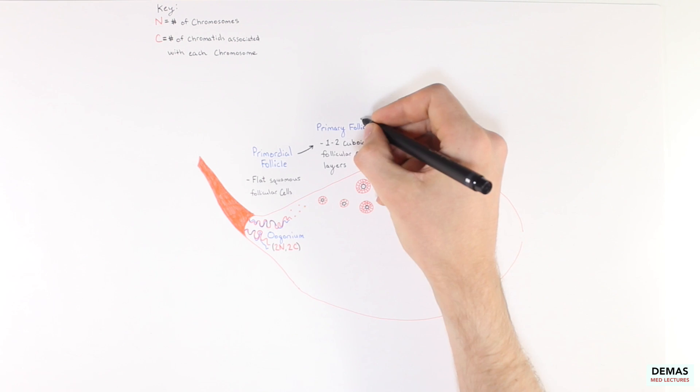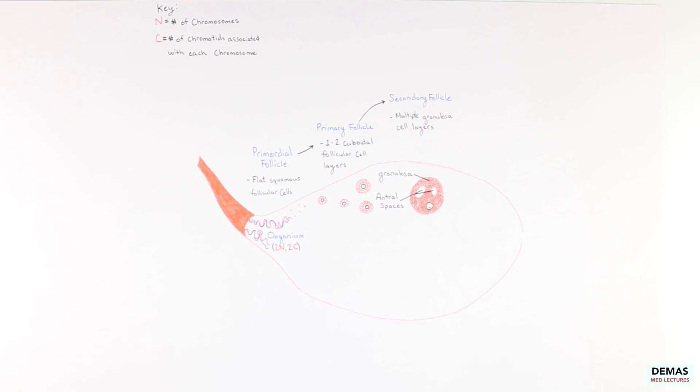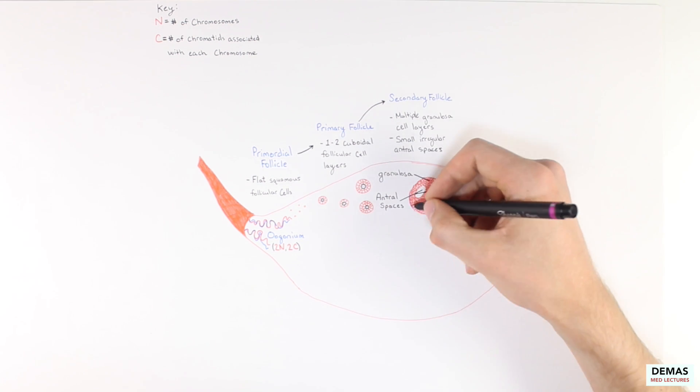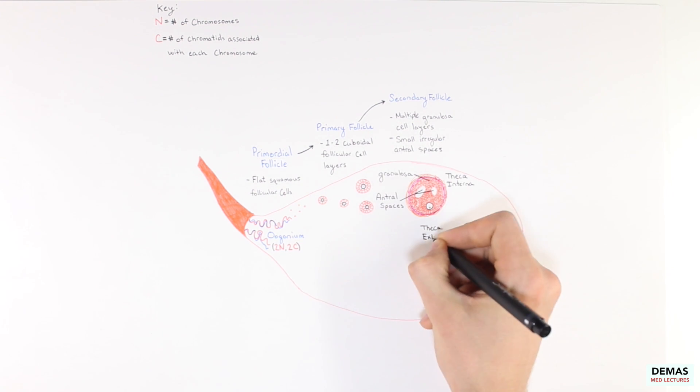The primary follicle continues to grow and develop, forming a secondary follicle. The secondary follicle contains a clustering of internal cells known as the granulosa cells and fluid-filled spaces within the follicle called antral spaces. In addition, two outer layers of the secondary follicle become viewable called the internal and external theca layers.